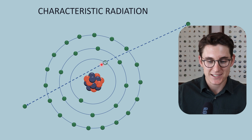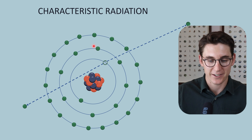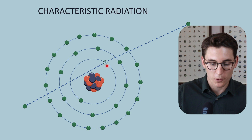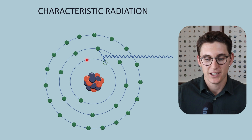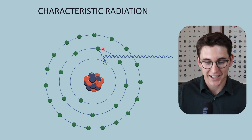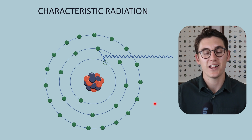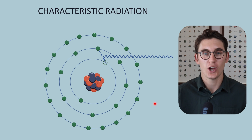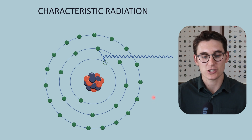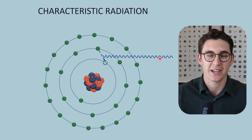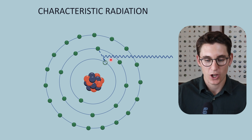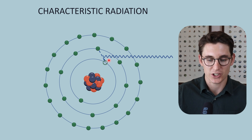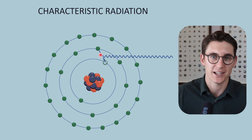Now we have a vacancy within our k-shell, and electrons from a higher energy shell — either an L-shell or an M-shell electron — will drop down into this lower energy k-shell and fill that vacancy. Because we are going from a higher energy shell to a lower energy shell, and energy in a closed system is conserved, we need to compensate for that loss of energy by releasing energy in the form of characteristic radiation.